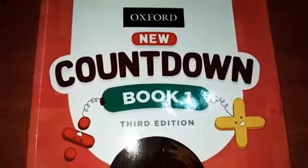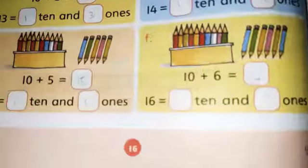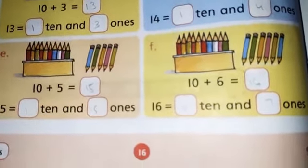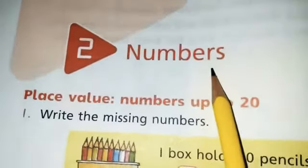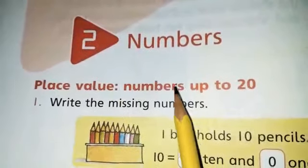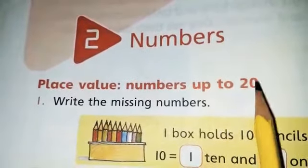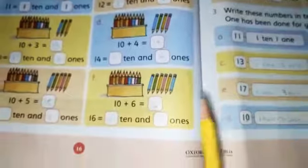Okay my dear students, take out your countdown book and open page number 16. On page number 16 we have a new topic which we have learned in our previous class. So our topic is numbers place value numbers up to 20. Students we have done these two pages in our previous classes, so today we are starting our work from page number 18.